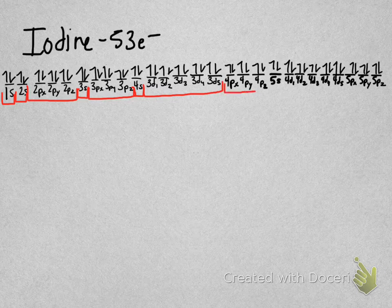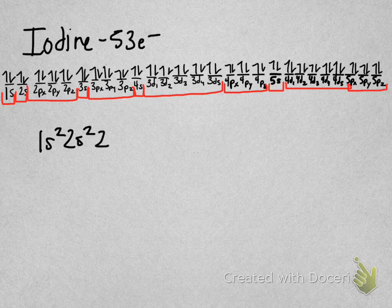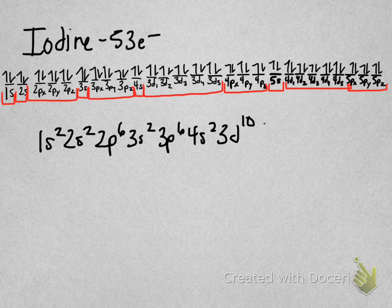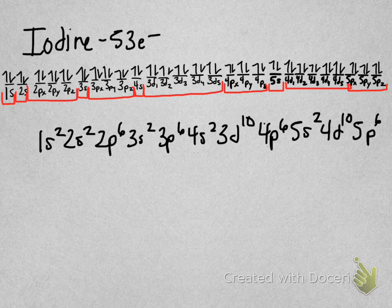There's my 3d, 4p, 5s, 4d, and 5p. Now I'm going to write 1s2, 2s2, 2p6, 3s2, 3p6, 4s2, 3d10. What a pain in the tuchus, 4p6, 5s2, 4d10, 5p6.